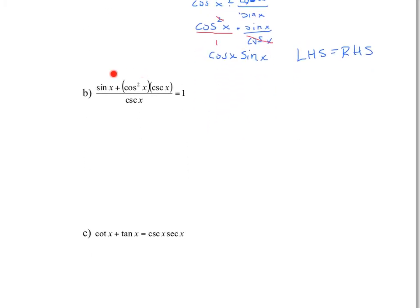Next example: we have all this stuff on one side equal to one. Obviously this side might be easier to work with since it has things we can change — we can change cosecant into one over sine. Let's manipulate it from there; the goal is to make it equal to one. We're going to start with the left-hand side and change cosecant, and there's more than one way to do this.